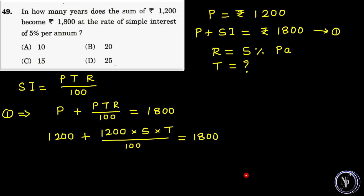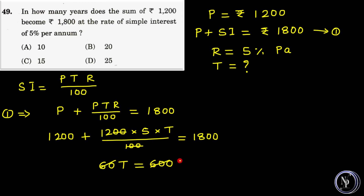Amounts are in rupees and time will be in years. Dividing 1200 by 100, the two zeros cancel and 12 into 5 is 60. Taking 1200 to the right-hand side, on the left what remains is 60T. On the right, 1800 minus 1200 is 600. Dividing, we get T is equal to 10.